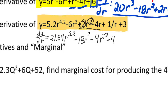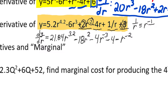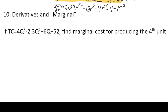For the -4r term, that becomes just -4. Now for the 1/r term — remember that 1/r is the same as r^(-1). So applying the power rule: multiply the coefficient by -1 and subtract 1 from the exponent. We get -1 × r, then the exponent becomes -1 - 1 = -2, giving -r^(-2). The constant +3 has derivative zero, so we don't include it.